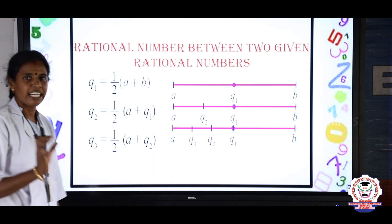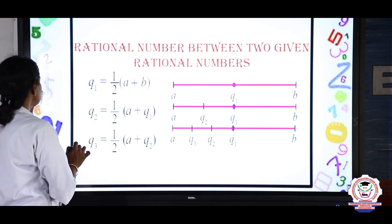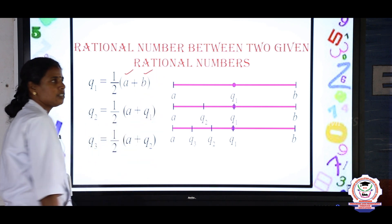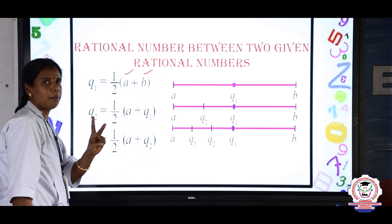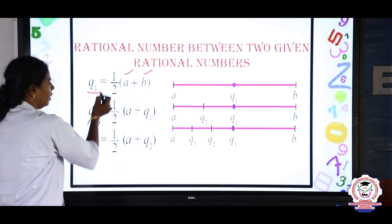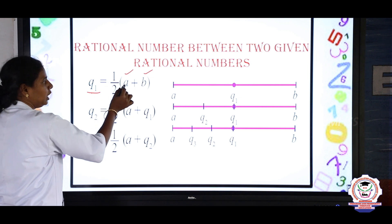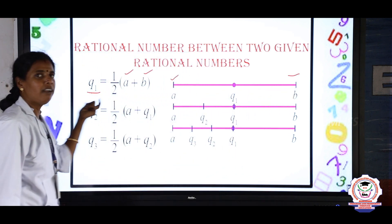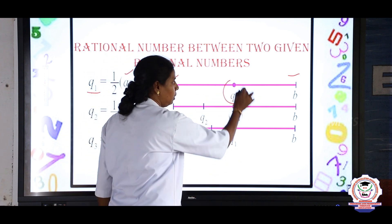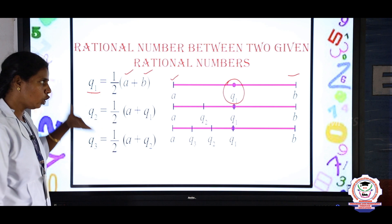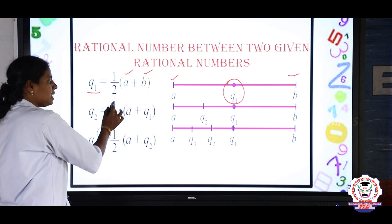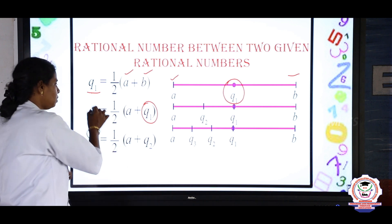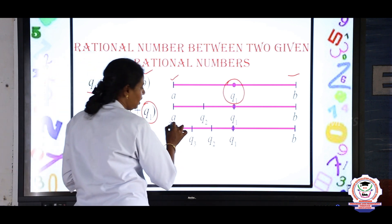Q represents the set of rational numbers. We are going to find Q1, which is the first rational number between A and B. A is the first rational number and B is the second rational number. Between these 2 rational numbers A and B, we are going to find one more rational number Q1. The formula is: Q1 = 1/2 × (A + B). On the number line, Q1 will lie between A and B.